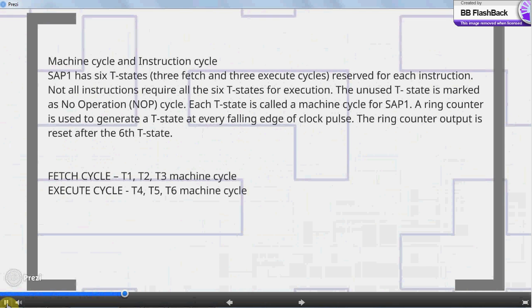A ring counter is used to generate a T-state at every falling edge of clock pulse. The ring counter output is reset after the 6th T-state. Fetch cycle: T1, T2, T3 machine cycle. Execute cycle: T4, T5, T6 machine cycle.